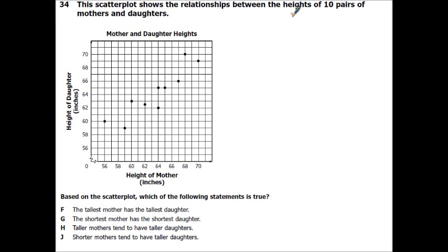The scatter plot shows the relationship between the height of 10 pairs of mothers and their daughters. Based on the scatter plot, which of the following statements is true? The tallest mother has the tallest daughter — here's the tallest mom, and we're saying she has the tallest daughter. She does not, because this mom has a taller daughter, so that can't be right.